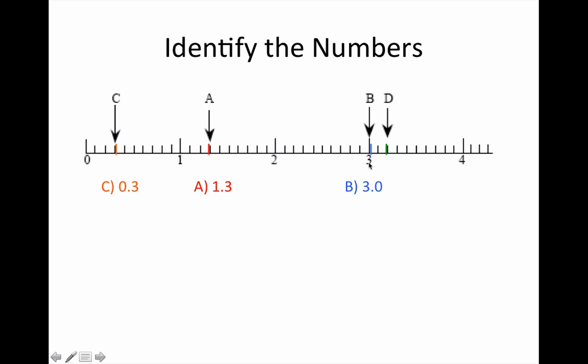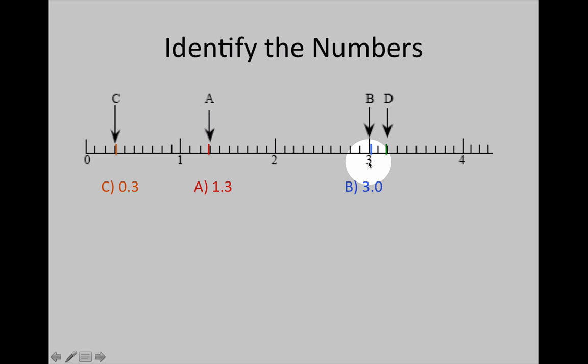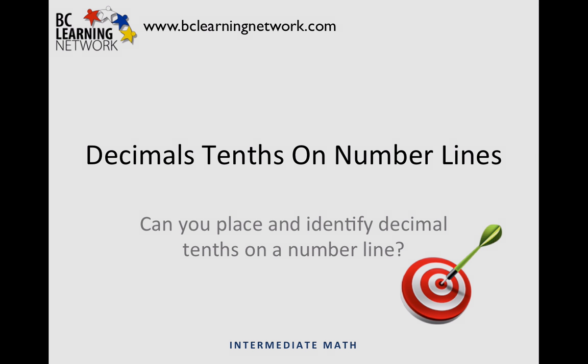D is going to be greater than 3. It's going to start with 3. And how many tenths past 3 is it? 1 tenth, 2 tenths. 3.2 reads as 3 and 2 tenths. Thank you for watching this video on decimal tenths on number lines.